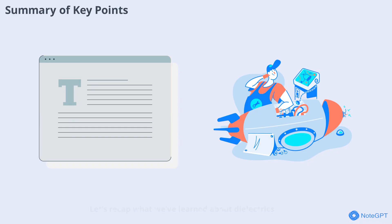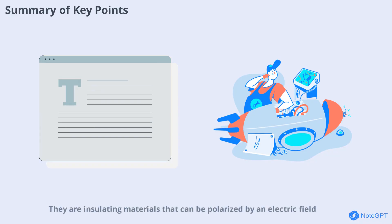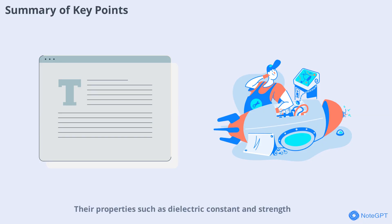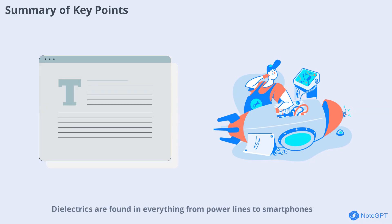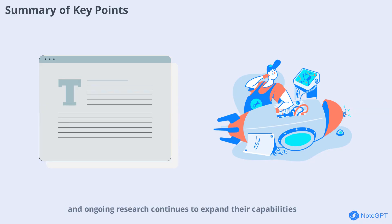Let's recap what we've learned about dielectrics. They are insulating materials that can be polarized by an electric field, making them essential in capacitors, insulators, and many other devices. Their properties such as dielectric constant and strength determine their suitability for different applications. Dielectrics are found in everything from power lines to smartphones, and ongoing research continues to expand their capabilities.